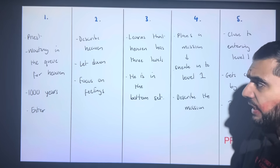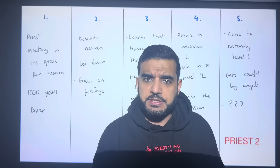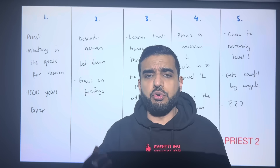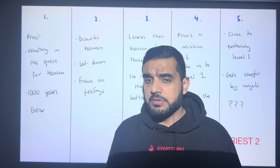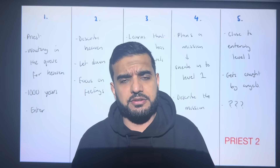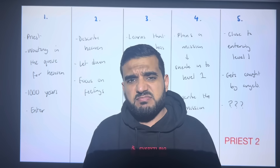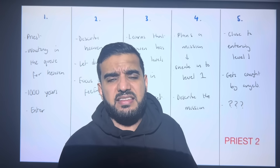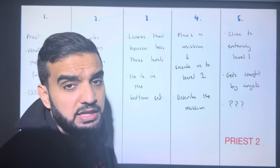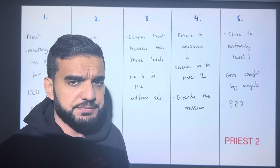Plot number two — priest part two. In paragraph one, it's been one thousand years and you've been waiting in the queue for heaven. The whole population is slowly entering, and at the end of the paragraph your name is called and you are allowed to enter heaven. In paragraph two, you describe heaven and you're a little let down — after all these years of worshipping God and being the best priest possible, heaven is not all that.